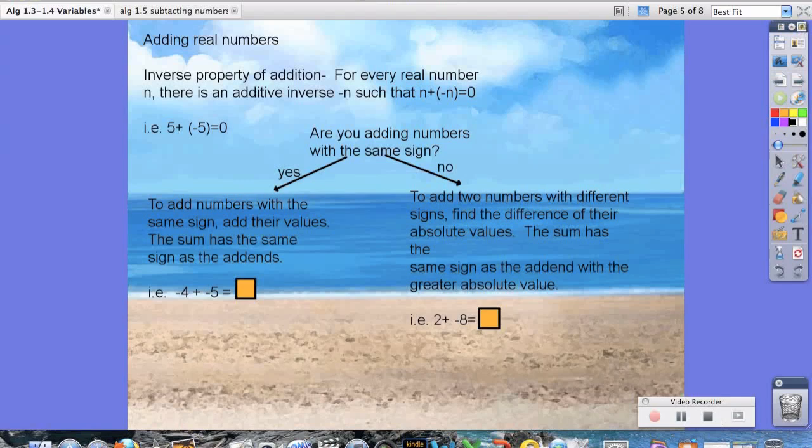Now when we add real numbers there's a couple things we have to discuss, which is the inverse property of addition. It states that for every real number n there is an additive inverse, negative n, such that n plus negative n equals 0.